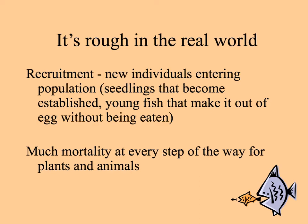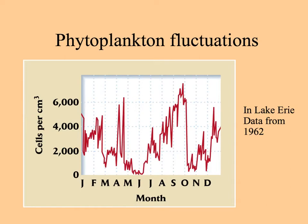For any living thing, it's not an easy life in the real world. There are limits to resources available and enemies around every turn, so many more individuals are born than are recruited to the population — those that actually become established with the potential of reproducing. For every plant and animal, there can be mortality at every step of the way. For microscopic photosynthetic algae, phytoplankton, their populations fluctuate dramatically through the course of a year, fed by the overturning of the lake in spring and fall, making more nutrients and letting populations grow. When thermal stratification stills the growth, population numbers fall.